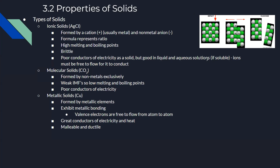When an ionic solid is struck with a hammer, the layers shift so that like charges align — nonmetals with nonmetals, cations with cations — causing repulsion and breaking the solid apart. This explains why ionic solids are brittle.